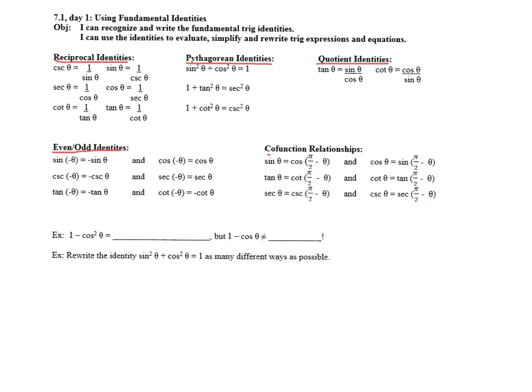Finally, we have co-function relationships over on the right, where if you take 90 or pi over 2 minus your angle, those are complementary, with an e, not an i.